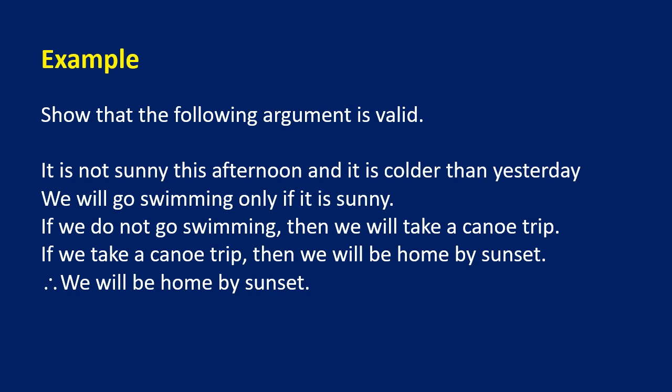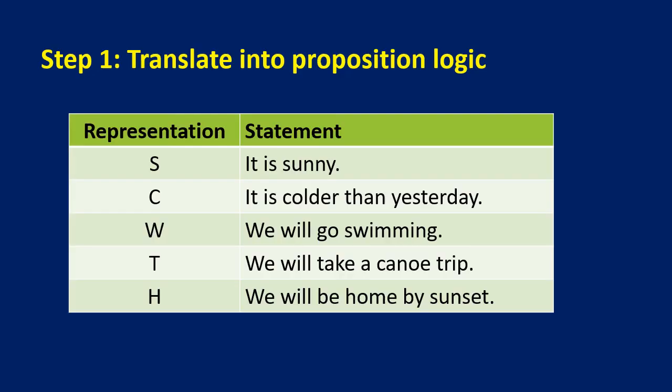Lastly, we will show that the following argument is valid. We have a series of premises and a conclusion. Instead of making a very long truth table, we use rules of inference — because we already know rules of inference are valid arguments. If we connect everything using valid arguments, the entire thing is valid. First, we translate the argument into propositional logic: S = it is sunny; C = colder than yesterday; W = we will go swimming; T = we will take a canoe trip; H = we will be home by sunset.